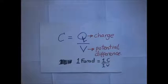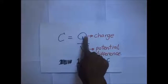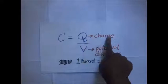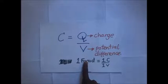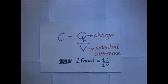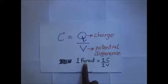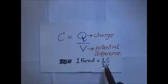Capacitance is the electrical property of a capacitor and is the measure of the capacitor's ability to store an electrical charge on its two plates. Q is measured in coulombs, voltage in volts, and the SI unit for capacitance is farads. One farad is one coulomb per volt — meaning one farad is the capacitance of a capacitor when charged with one coulomb with a potential difference of one volt across its plates.